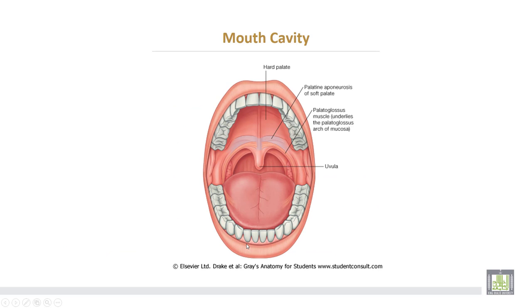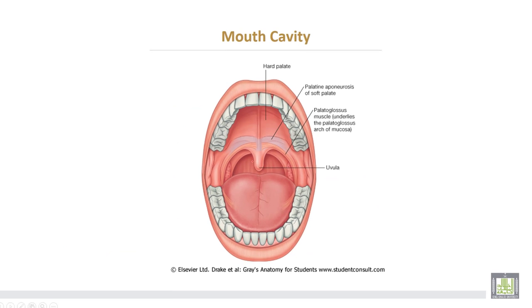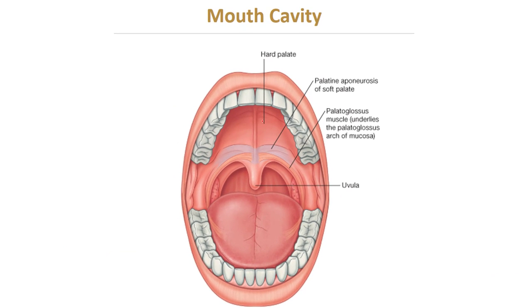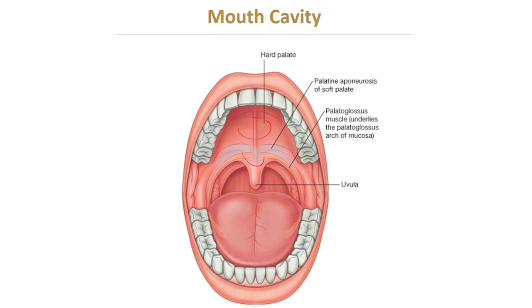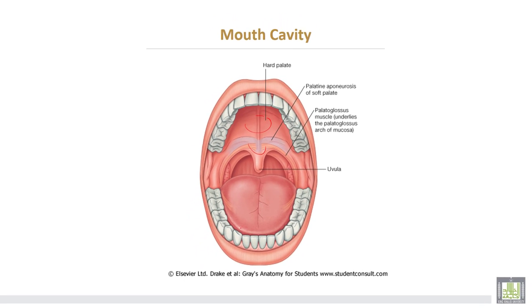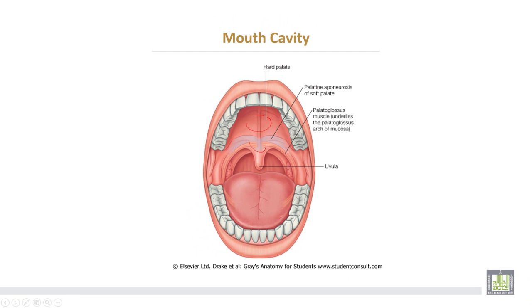This is the mouth cavity. The roof is the hard palate and this is the soft palate. The floor consists of the tongue, outside the teeth and the gums.